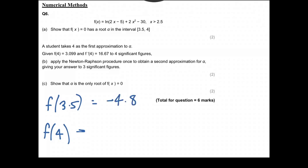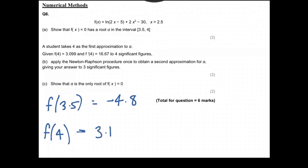And for 4, if I just go back and change all those values to fours, I get f(4) is going to be rounding to 3.1.